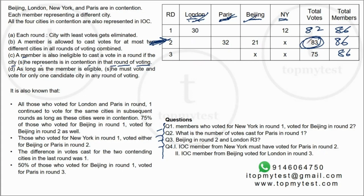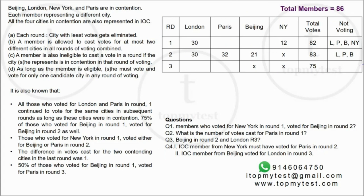From round one to round two, total votes increased because the New York delegate can now vote. But from round two to round three, votes decreased from 83 to 75. This means some people became ineligible. The only reason for ineligibility is voting for two different cities that both got eliminated. So some members voted for New York in round one and then Beijing in round two — and since both are now eliminated, they cannot vote in round three.